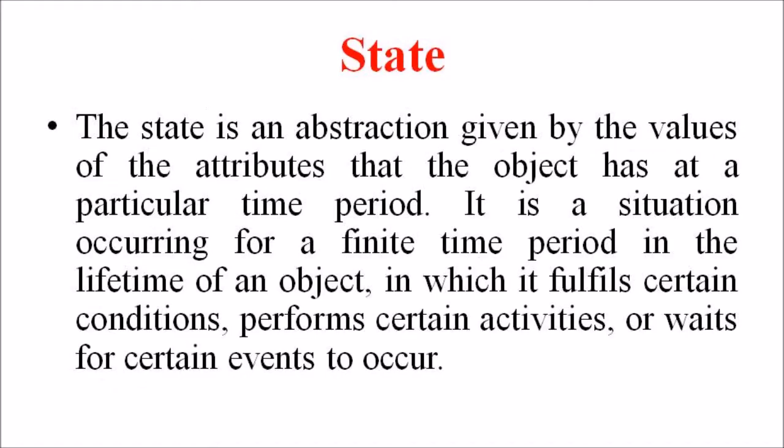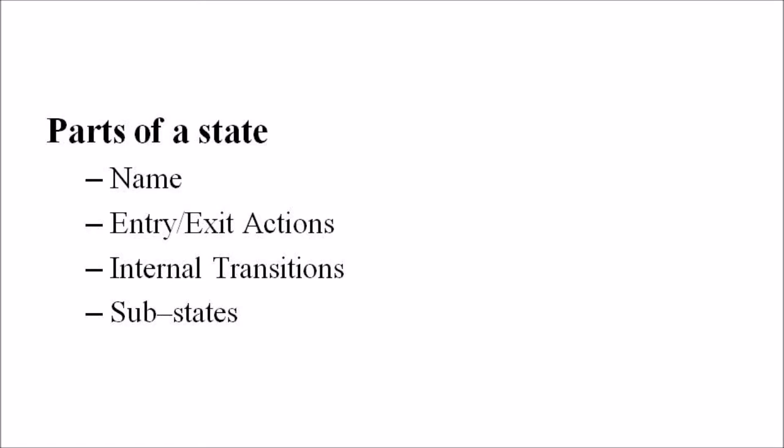Now we are going to discuss the state and state transitions. The state is an abstraction given by the values of the attributes that the object has at a particular time period. It is a situation occurring for a finite time period in the lifetime of an object in which it fulfills certain conditions, performs certain activities, or waits for certain events to occur. In a state transition diagram, a state is represented by rounded rectangles.